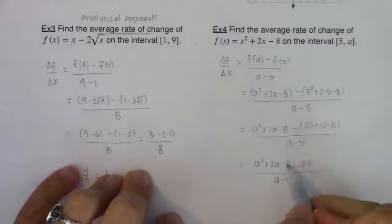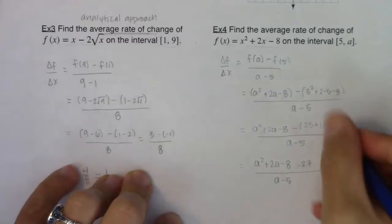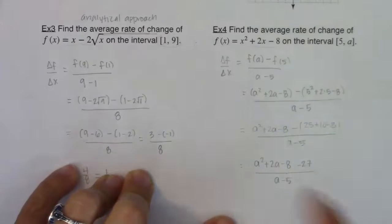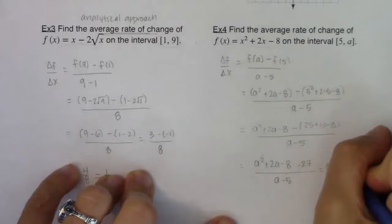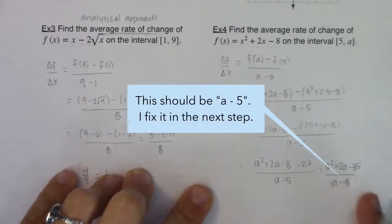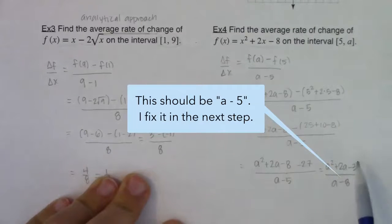And I'm seeing that these are still like terms, negative 8 minus another 27. Let me erase this just so I can have a little bit more room. This is going to be A squared plus 2A minus 35 in ratio to A minus 5.